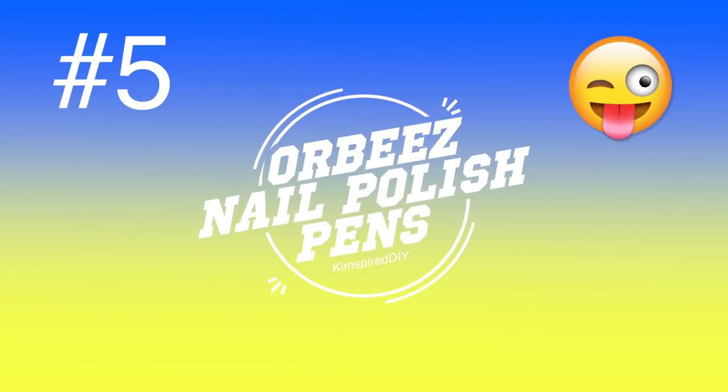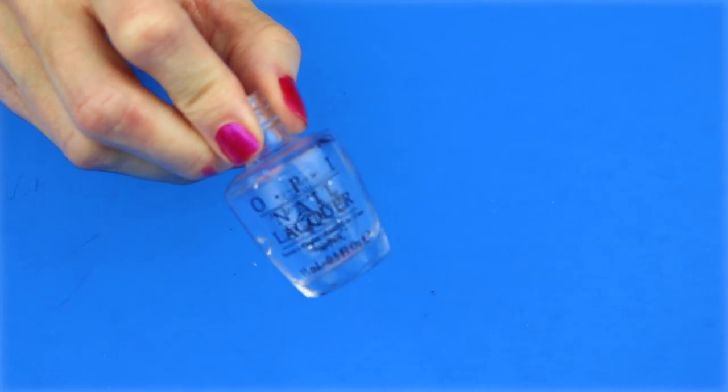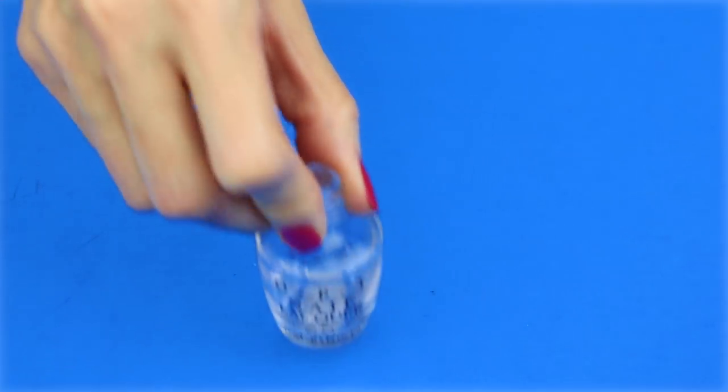The fifth DIY will be Orbeez nail polish pens. This is similar to the nail polish pens that I made earlier. And I will leave a link down below if you want to watch that video. I started by cleaning out a nail polish bottle. And the other video that I talked about will show you how to do that.